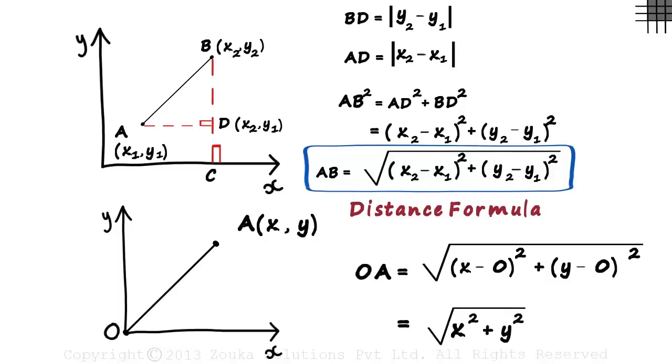If the line segment starts from the origin, its length will be the square root of x squared plus y squared, where x and y are the coordinates of the other endpoint.